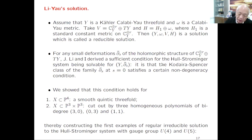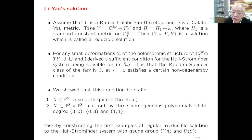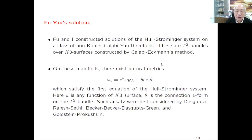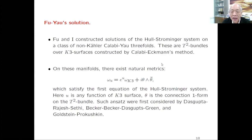This therefore gives rise to regular, irreducible solutions to the Strominger system with gauge group U(4), U(5), or higher rank. These give models where the gauge group is SU(4) and SU(5)—related to Grand Unified field theory, which requires a group of SU(5). The solutions constructed with Jun Li are Kähler, in the sense that the background metric is a Kähler metric, so we are making a perturbation of it.